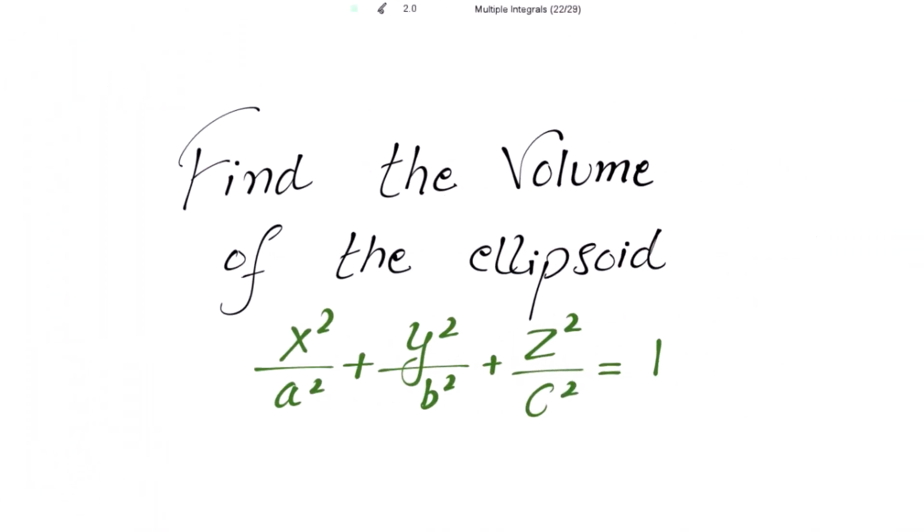We need to find the volume of the ellipsoid x-squared over a-squared plus y-squared over b-squared plus z-squared over c-squared equal to 1.